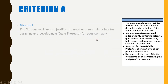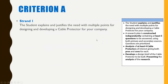Strand one is where the student explains and justifies the need with multiple points for designing and developing the cable protector for your company. This is where you make up the situation or the story behind why you need to make this cable protector. The more interesting and engaging you make that, the better the grade, so make sure you're justifying it.